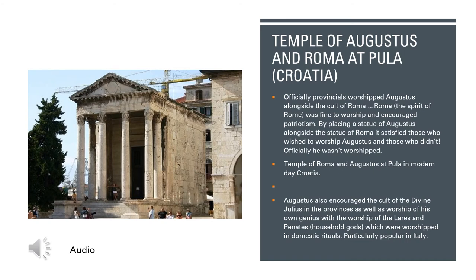The other two sources we've looked at are effectively in Africa — one's in Egypt, one's in Kush, in Meroe. This one, however, is in Croatia, which is European, and this is the Temple of Augustus and Roma — the Spirit of Rome — at Pula. Officially, provincials worshipped Augustus alongside the Cult of Roma. Roma, the Spirit of Rome, was fine to worship, and that of course encouraged patriotism — a little bit like worshipping Britannia or the Spirit of Britain would encourage patriotism here. By placing a statue of Augustus alongside the statue of Roma, it satisfies those who wish to worship Augustus and also those that didn't. Officially he wasn't worshipped, but Roma was. But if you have the image of the Emperor next to the Spirit of Rome, it's obvious that in people's minds he becomes associated with the Spirit of the State.